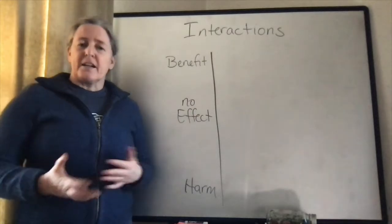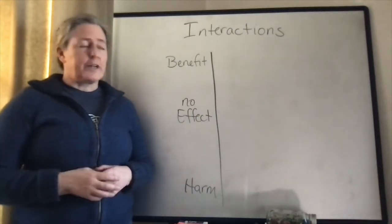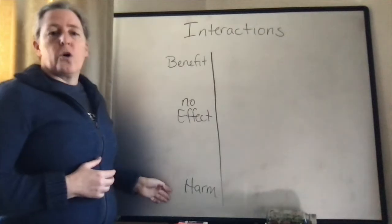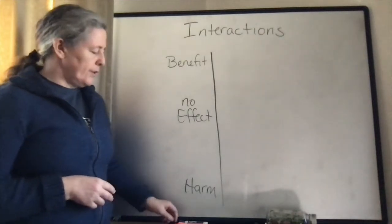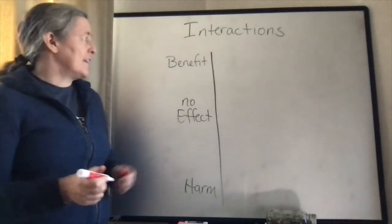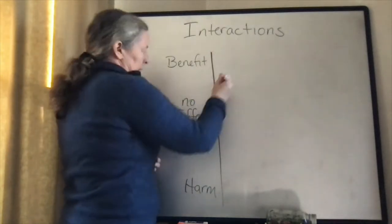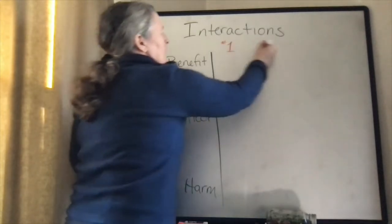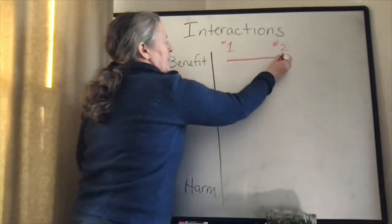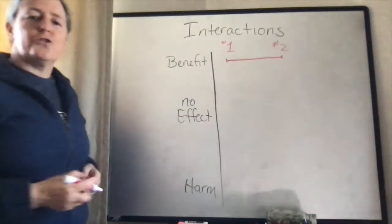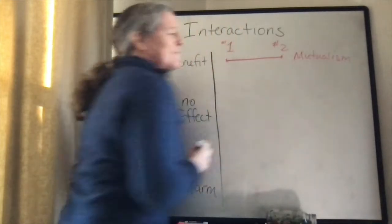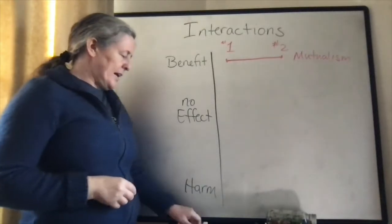There are many different interactions that can occur between different types of organisms. One of the ways we can categorize them is by how much benefit or harm those interactions have to either organism. Sometimes organisms support each other and help each other. For example, if organism one and organism two both experience a benefit, it's mutually beneficial, and we say that is mutualism. Both organisms benefit from the interaction that they have.